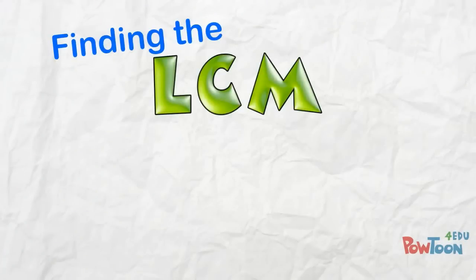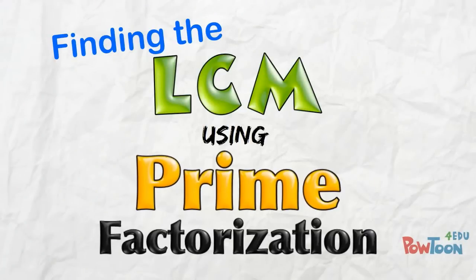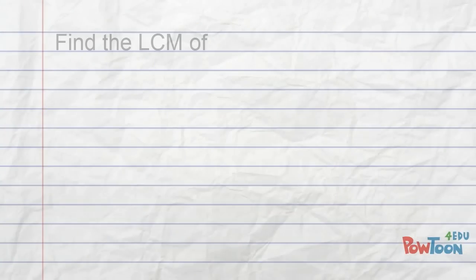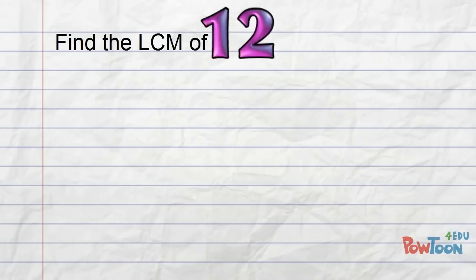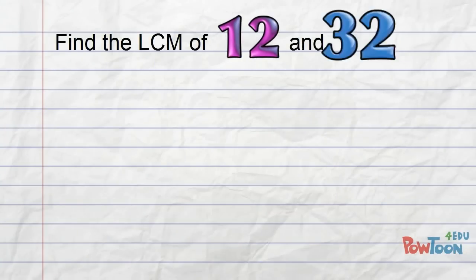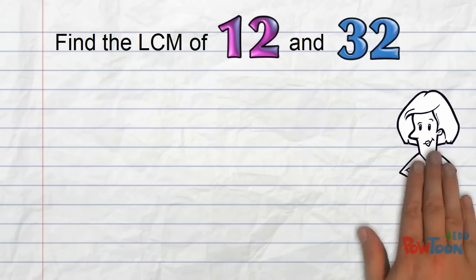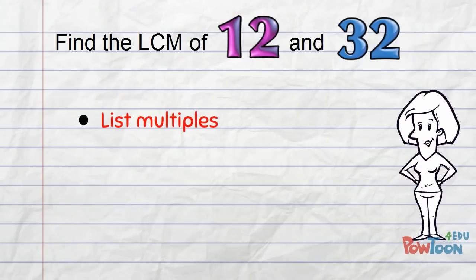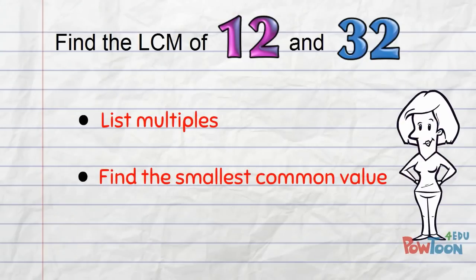Finding the LCM using prime factorization. If we have to find the LCM of 12 and 32, we know we can list some multiples and find the smallest value common to both numbers.